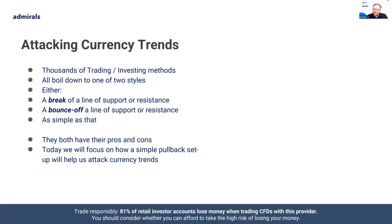There are thousands of trading and investing methods — you can go on the internet and search for them, from free to very expensive. But as a general rule, most trading and investing methods boil down to one of two styles: you're going to trade a break of a line of support or resistance, or you're going to trade a bounce off a line of support or resistance. There might be indicators involved or several elements coming together, but when you boil it down, that's what the majority of trading methods are.